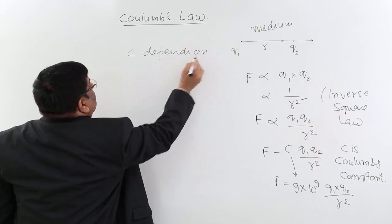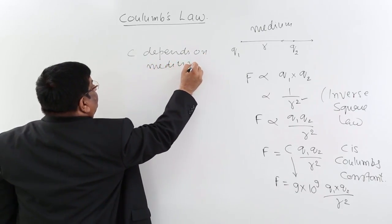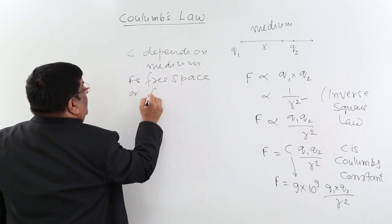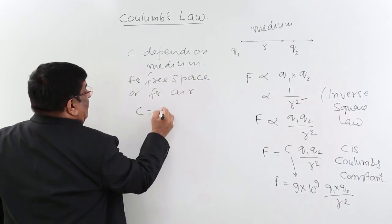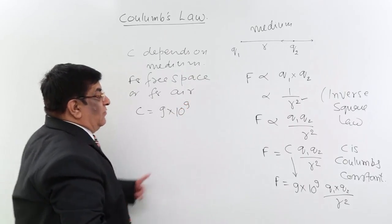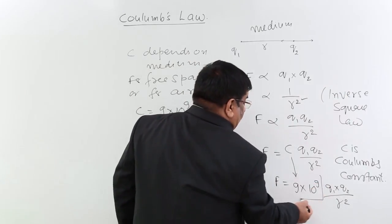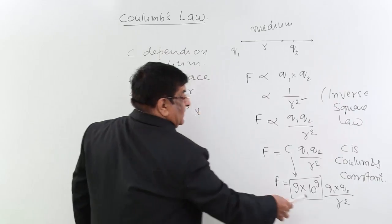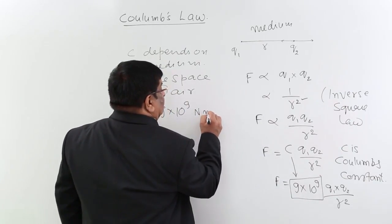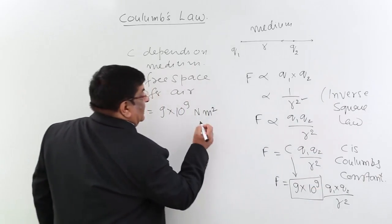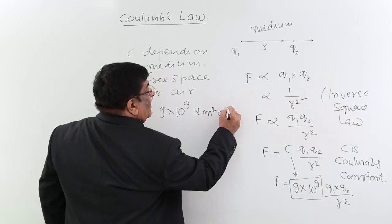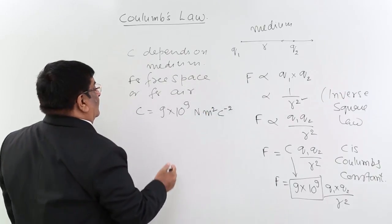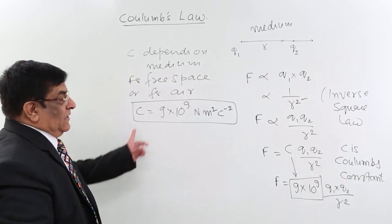So depends on medium. For free space or for air, C has a value 9 into 10 to the power 9 and now we can fix up its unit. Force has a unit of Newton, R square will be meter square, Coulomb, Coulomb per Coulomb square. So C, 9 into 10 to the power 9 Newton meter square per Coulomb square, this is value of Coulomb's constant.